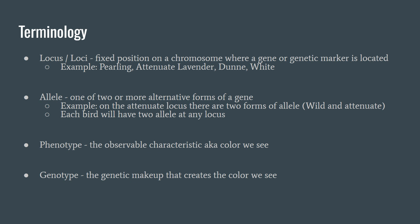We will start with some basic terminology. The first term we will talk about is a locus, or the plural form, loci. A locus is a fixed position where that gene or genetic marker is actually located on the DNA strand. Examples in guinea fowl of this include the pearling, attenuate, lavender, dun, and white locus.